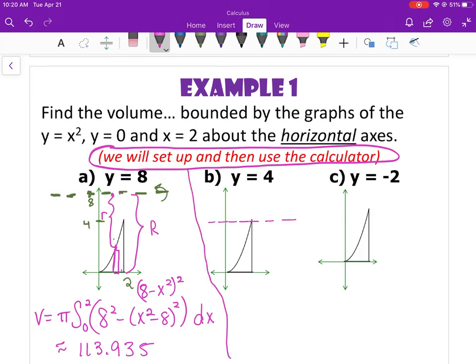Y equals four is going to be this line right here. So again, rectangle goes here. This distance represents R. This distance represents little r. I'm still going from zero to two. Big R is the distance from zero to four. It's four. Little r is the distance from the curve to four. Again, it doesn't matter if I do x squared minus four or four minus x squared.